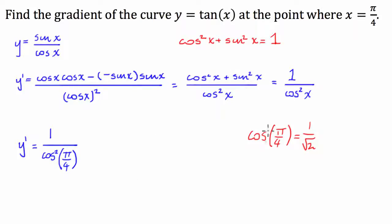So the cosine squared of pi over 4 is going to be equal to 1 over 1 over square root 2 all squared, which is equal to 1 over a half, which is equal to 2.